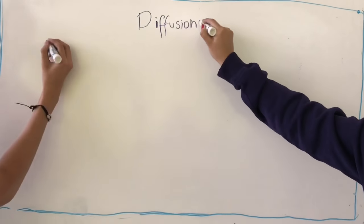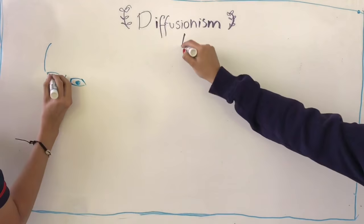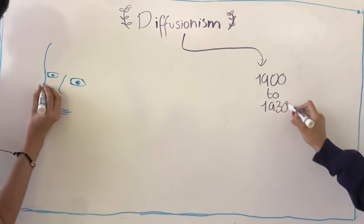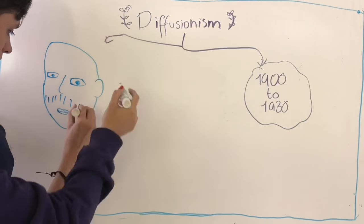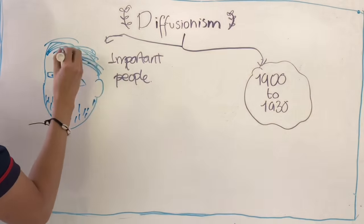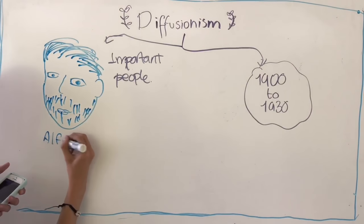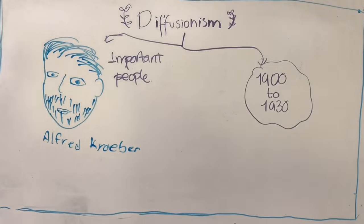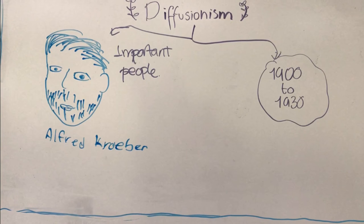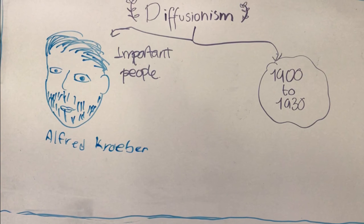The period for this theory is from 1900 to 1930. And the main representatives are Alfred Kroeber from USA and Frederick Ratzel from Germany.